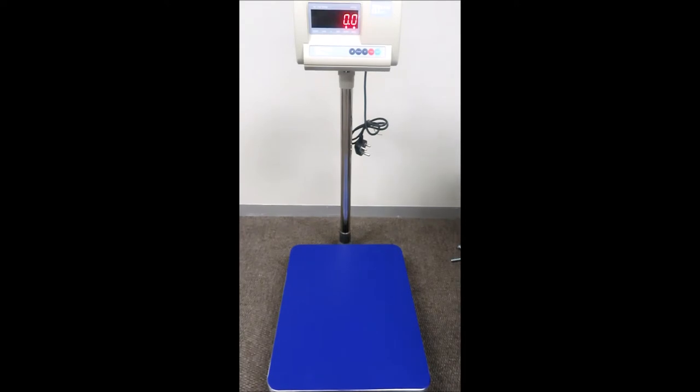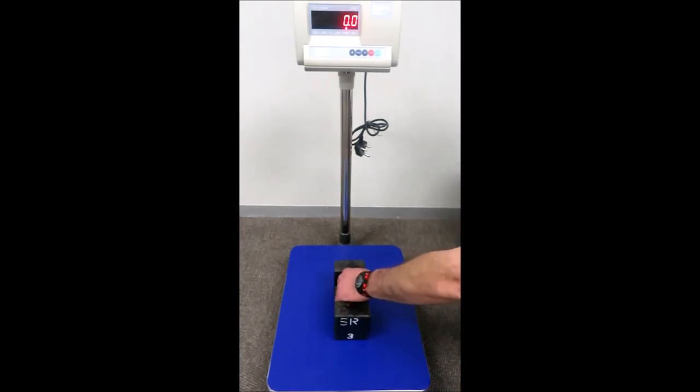Place weight on the scale. It will show the weight on the platform. You can tare it out. The scale will go to zero.